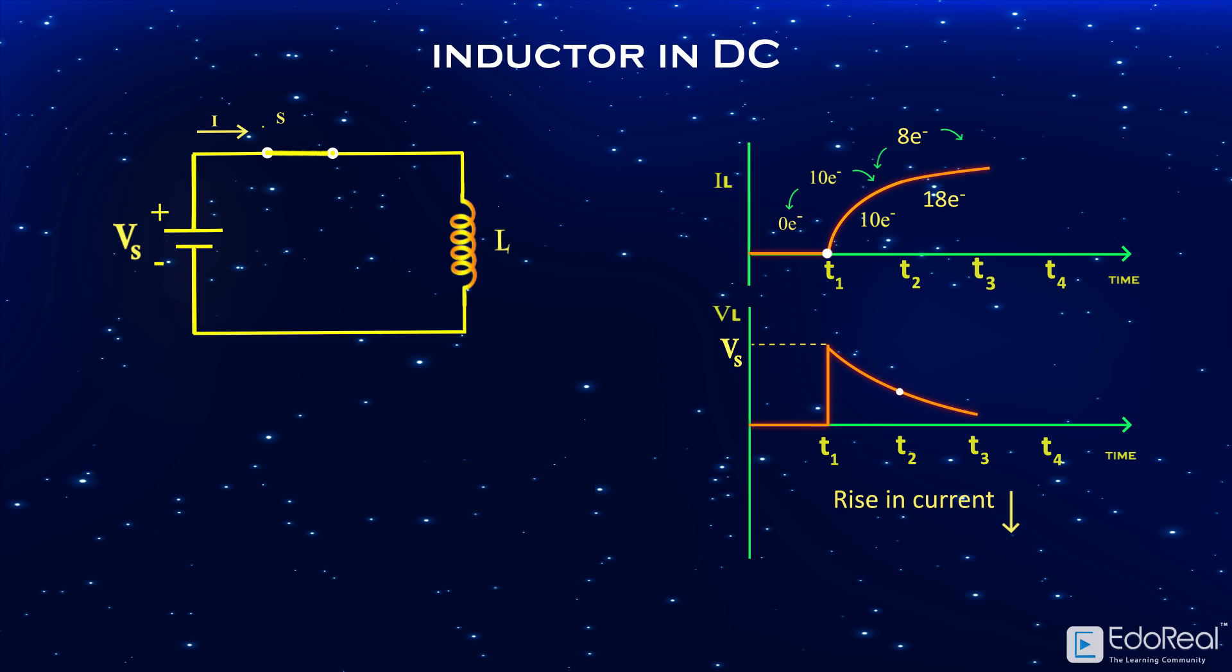Between time t3 and t4, the same procedure will continue till current reaches steady state. That is, at time t4, the rate of change in current becomes zero. Hence the induced voltage becomes zero. At this point, the change in flux becomes zero, which means the flux is constant. So we can say that the inductor stores energy in the form of magnetic field.